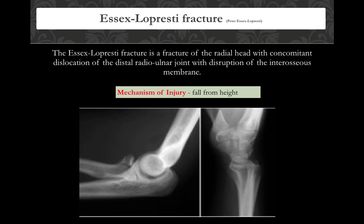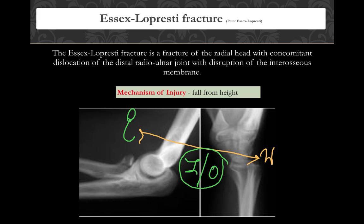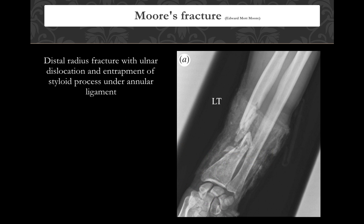The Essex-Lopresti injury has a component at the elbow and a component at the wrist, connected by damage to the interosseous membrane. There is a fracture of the radial head with dislocation of the distal radio-ulnar joint due to disruption of the interosseous membrane. If asked what the Essex-Lopresti injury primarily involves — radial head, interosseous membrane, or distal radio-ulnar joint — the best answer is the interosseous membrane, as it explains the mechanism.